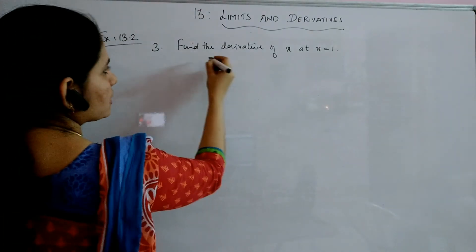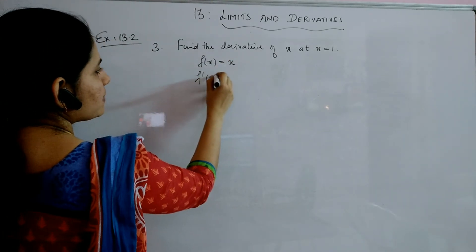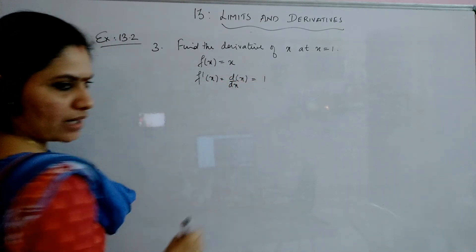So for this question, your f of x is x. So f dashed of x will be actually d by dx of x. What is the derivative of x? It is 1, right?